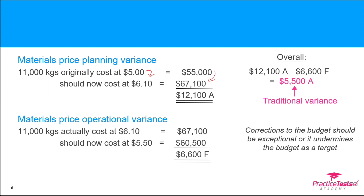We always flex to actual, so 11,000 kilos at the original $5 versus corrected $6.10 gives us an expected cost of $67,100 — that's an adverse planning variance of $12,100, because it increases our expected costs. All planning variances represent bad news in that the plans weren't right. Now that we've corrected the benchmark to $67,100, we compare that to actual: the fair benchmark is $6.10 but we actually paid $5.50, so 11,000 × $0.60 = $6,600 favorable operational variance.